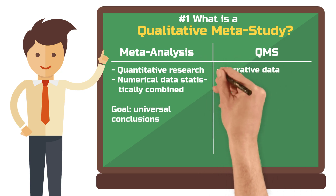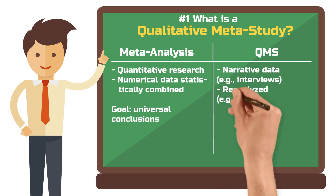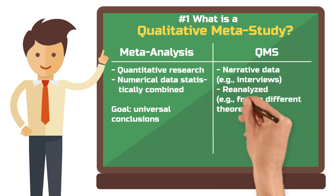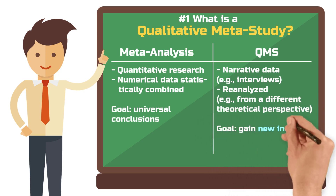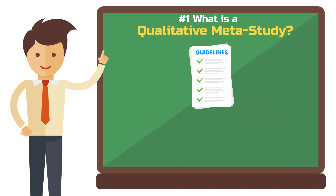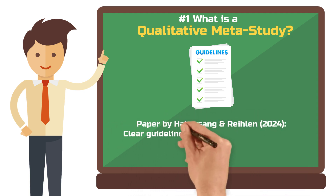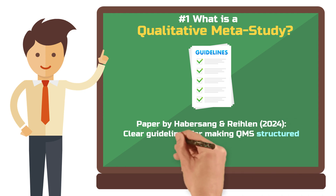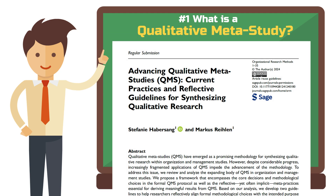In qualitative research, however, the focus is on narrative data such as interviews and case studies. These are not merely aggregated, but reanalyzed — often from a new theoretical perspective — to generate fresh insights. Until recently, the process for conducting qualitative meta-studies lacked clarity. But in 2024, a groundbreaking paper by Habersang and Rylan provided detailed guidelines for structuring and standardizing qualitative meta-studies, making the method more accessible and comparable.